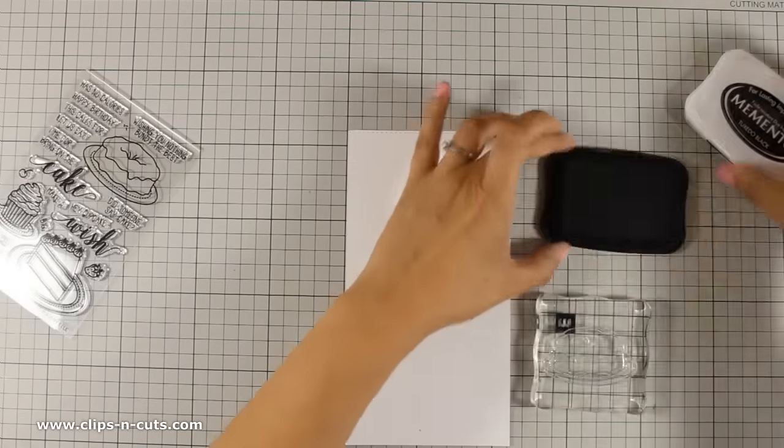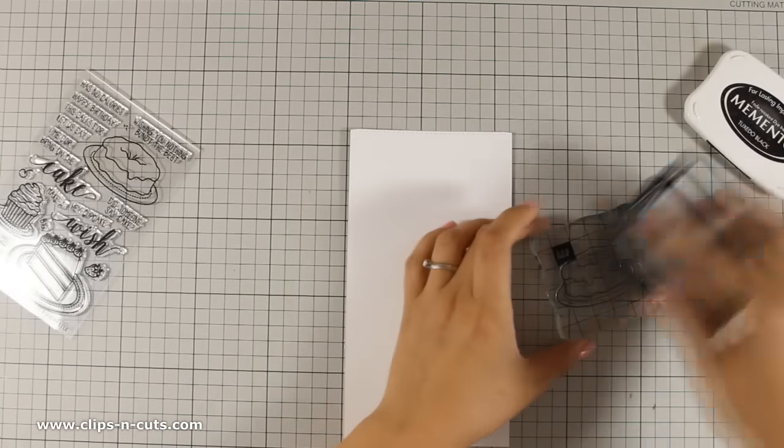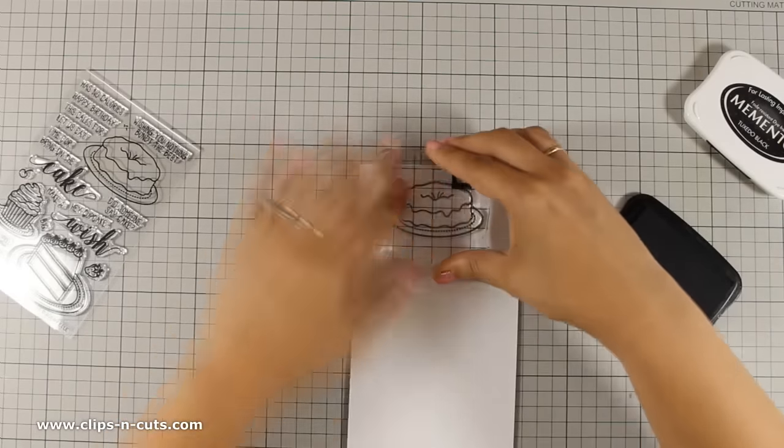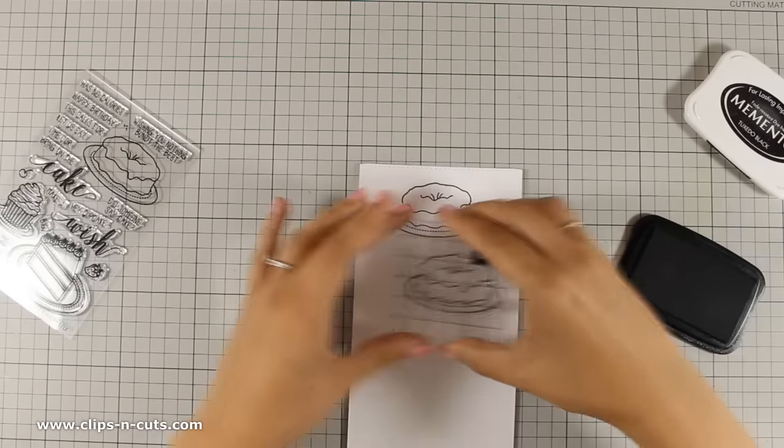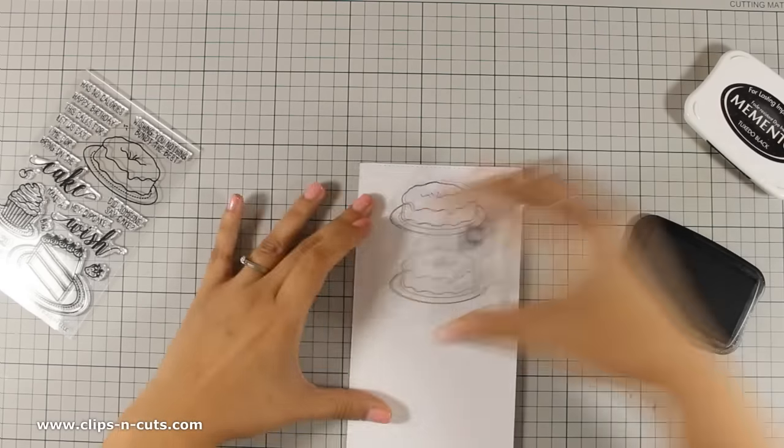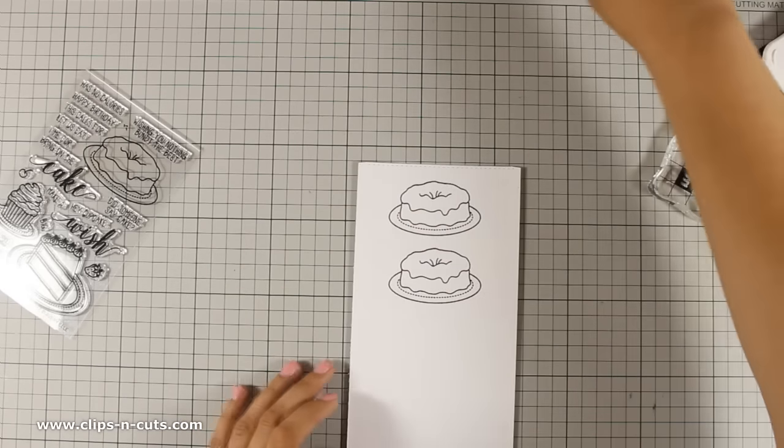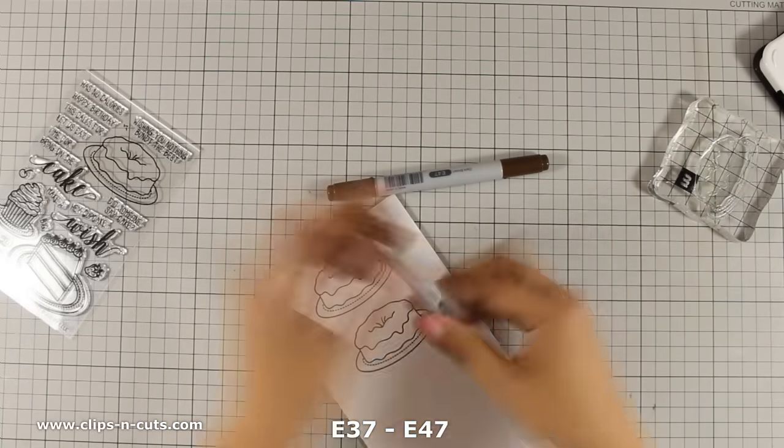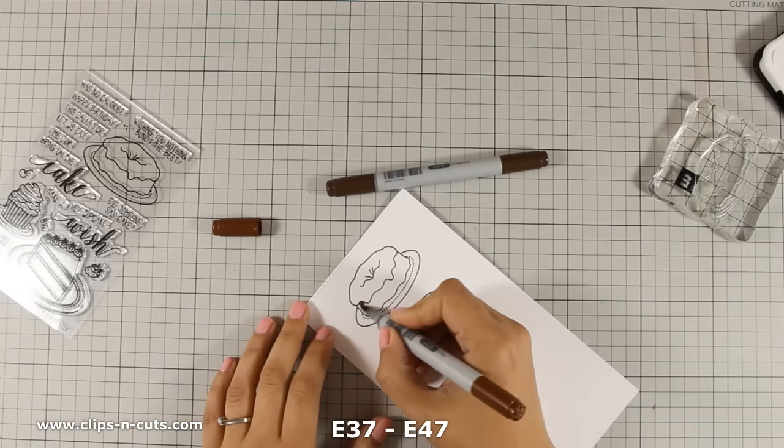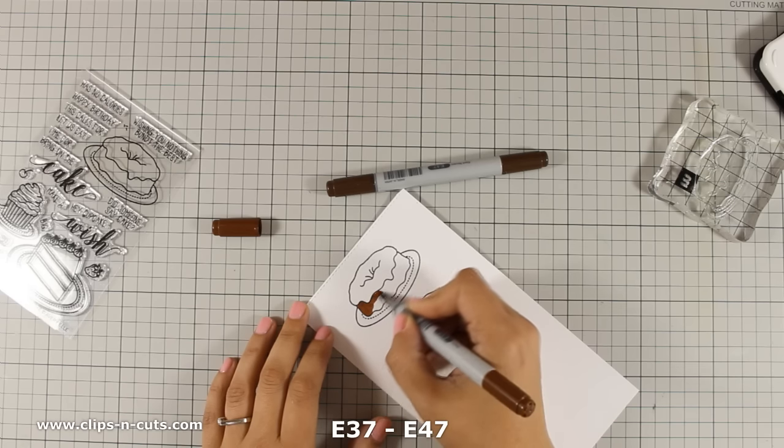For today's card I will be using the big cake that comes in this stamp set and I am going to stamp it on white cardstock using my black memento ink. I am using black memento ink just because I will be using my Copic markers to color part of this image. Actually the cake is going to be a paper pieced image and you will see what I mean as I move on.